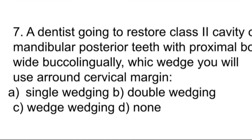A dentist is going to restore a class 2 cavity of mandibular posterior teeth with a proximal box wide buccolingually. Which wedge will you use around the cervical margin? This question requires knowledge about single wedging, wedge wedging, and double wedging. The key point is that the proximal box is wide buccolingually — in that case, you must use double wedging.